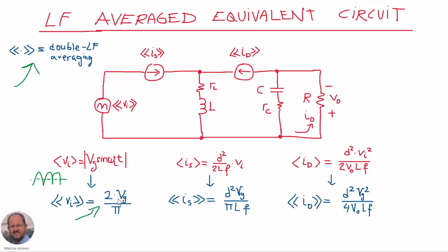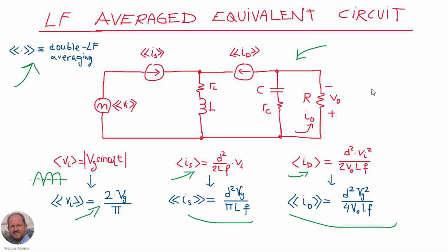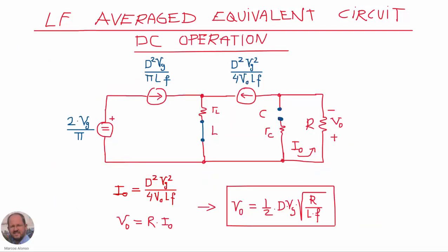The same thing is done with the average current through the switch, which changes with the input voltage — we get this expression for the second average value. Similarly for the current through the diode. Then we get this equivalent circuit in which we have averaged both the switching frequency and the line frequency. Now we can use our equivalent circuit to study both the static and the dynamic behavior of our converter.